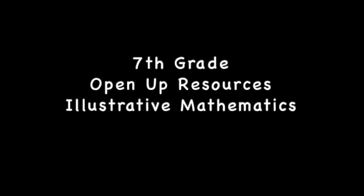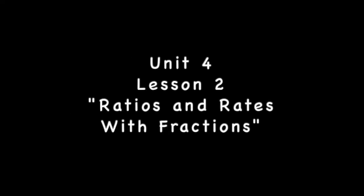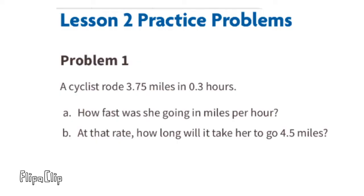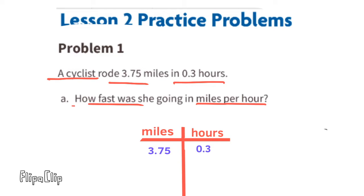Seventh grade Open Up Resources Illustrative Mathematics, unit four, lesson two: ratios and rates with fractions. Problem number one: a cyclist rode 3 and 75 hundredths miles in three-tenths of an hour. Part a: how fast was she going in miles per hour? Let's make a chart with miles on the left and hours on the right.